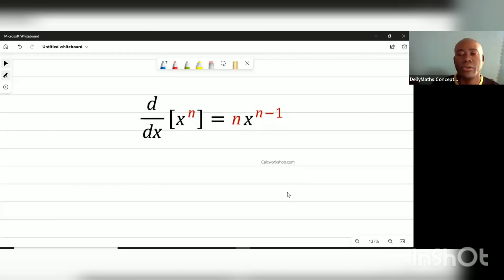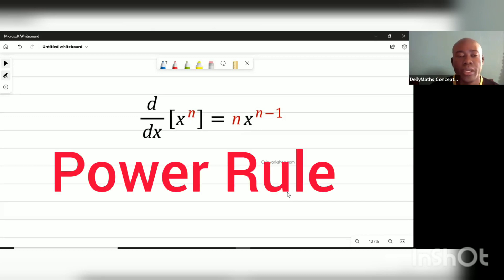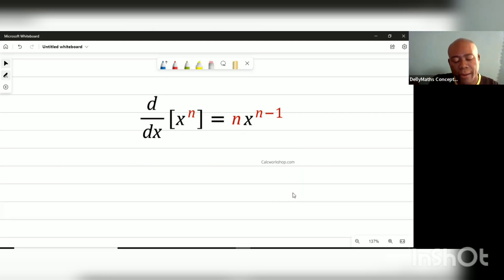So number one is the power rule. The power rule is actually the first level of taking differential with our polynomials. This is suggesting that the derivative of the polynomials...